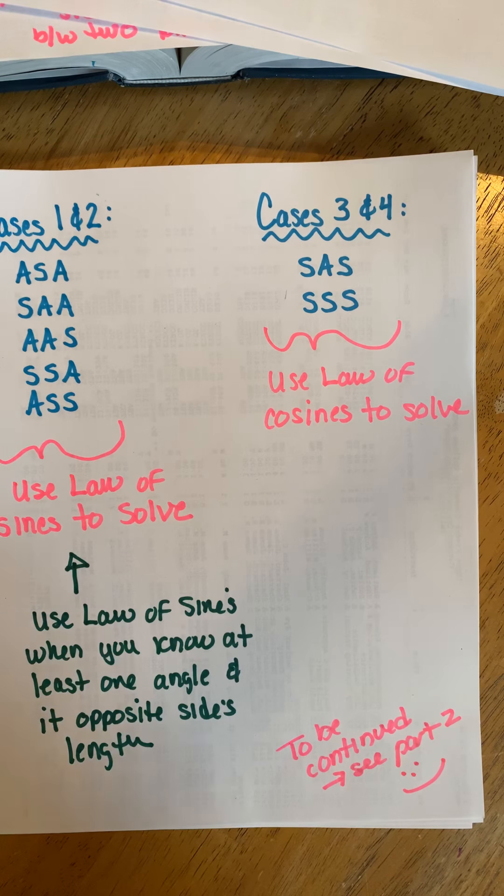Cases 1 and 2 — ASA, AAS/SAA, and SSA — all have something in common: we use the Law of Sines to solve these. Cases 3 and 4 — SAS and SSS — we're going to use the Law of Cosines.